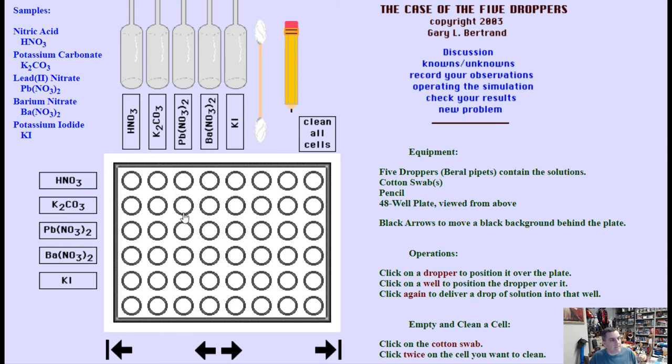What you've got here is a well plate, essentially a bunch of really short test tubes smooshed together. You're looking from the top down at these little areas where you can put drops of different chemicals and see how they react. The nice thing is they're really well organized so you can make a little matrix, a little grid, and label things with columns and rows.